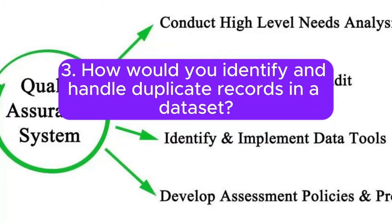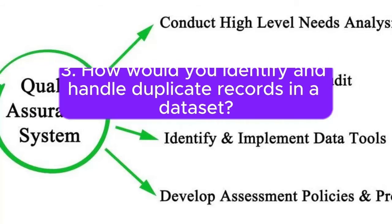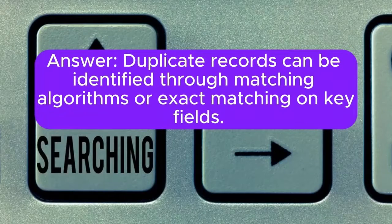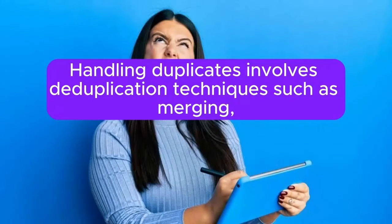3. How would you identify and handle duplicate records in a dataset? Answer: Duplicate records can be identified through matching algorithms or exact matching on key fields. Handling duplicates involves deduplication techniques such as merging, discarding, or flagging duplicate records based on business rules.